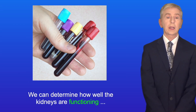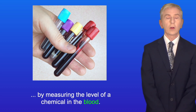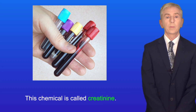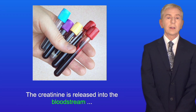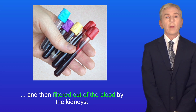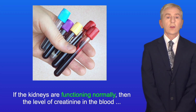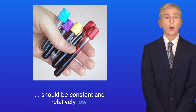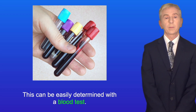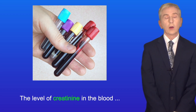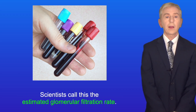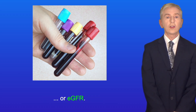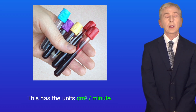Now, we can determine how well the kidneys are functioning by measuring the level of a chemical in the blood called creatinine. Creatinine is formed during the normal breakdown of muscle tissue by the body. The creatinine is released into the bloodstream and then filtered out of the blood by the kidneys. So, if the kidneys are functioning normally, then the level of creatinine in the blood should be constant and relatively low, and this can be easily determined with a blood test. The level of creatinine in the blood is used to estimate the filtration rate of the kidneys. Scientists call this the estimated glomerular filtration rate, or EGFR, and this has the units centimeters cubed per minute.